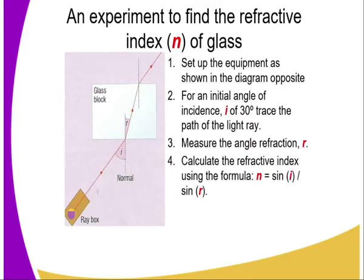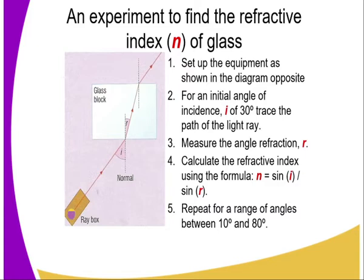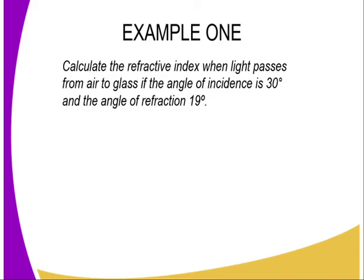We are also required to calculate the refractive index using the formula n equals sine i divided by sine r. When we repeat with different angles of incidence, starting from a range of 10 degrees to 80 degrees, we realize that we get an average value of n, which is the refractive index.